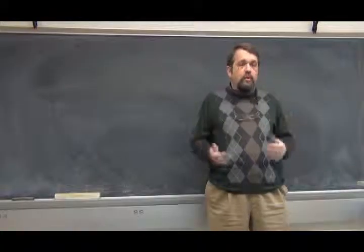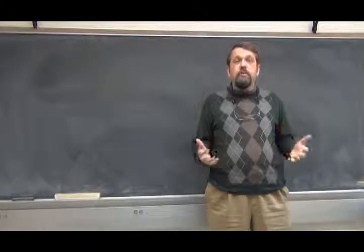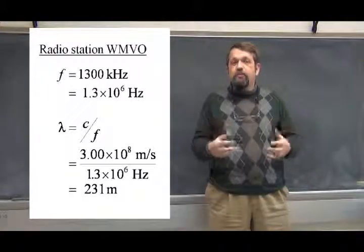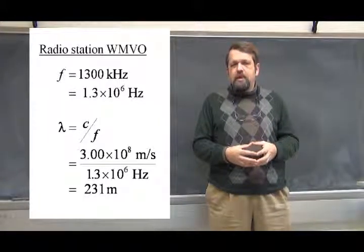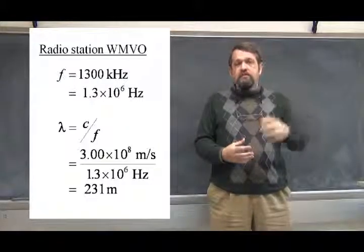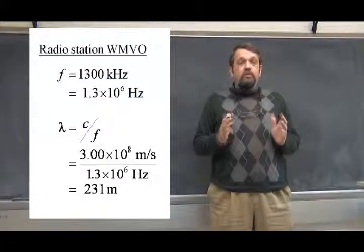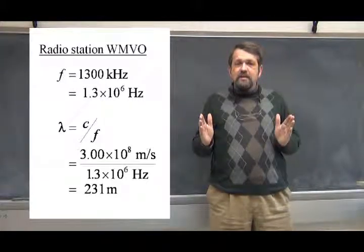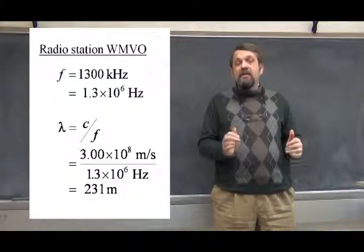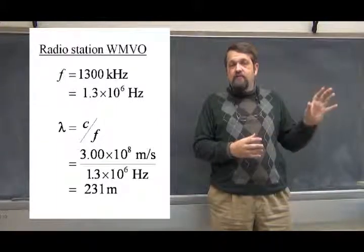So we can do a simple calculation with what we know. If you listen to local radio, you'll know that the frequency of Mount Vernon Station's WMVO is 1300 kilohertz — that's 1.3 times 10 to the 6 cycles per second. We can figure out the wavelength of the radio waves from WMVO: that's the speed of light C divided by the frequency, which works out to about 231 meters. That is to say, there's 231 meters of space between successive points where the transverse component of the electric field is greatest in the radio signals from the antenna on Radio Hill.